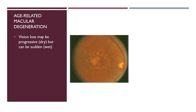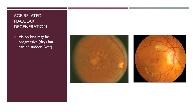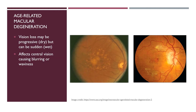On direct ophthalmoscopy, one will see yellow deposition within the center of the retina near the fovea, representing lipofuscin in the dry form of the disease. However, this can convert to the wet form, where fluid and blood are leaked into the subretinal space, causing disruption of the photoreceptors. This leads to sudden central vision blurring or waviness. Direct ophthalmoscopy may reveal intra-retinal hemorrhages, and the mechanism of vision loss is damage to the photoreceptors.